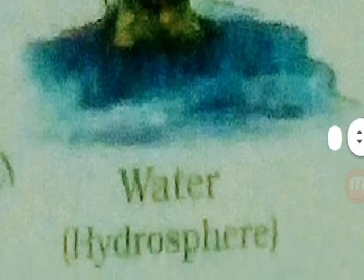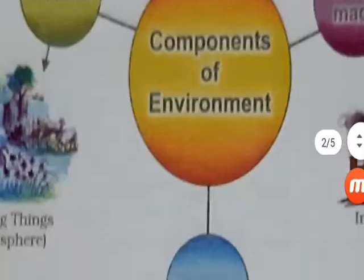Continuing the natural components: Atmosphere (air) and Hydrosphere (water). Human-made components of environment include buildings, parks, bridges, roads, monuments, and industries.